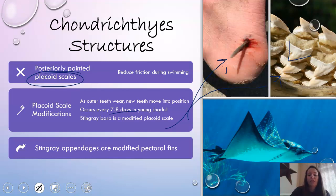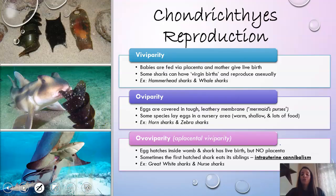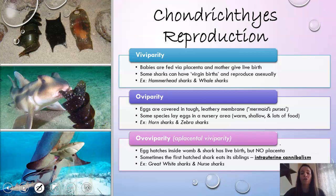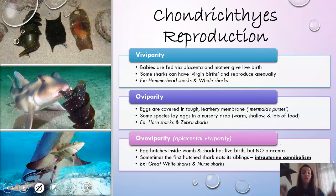Reproduction is also very unique in chondrichthyes. There are three different types. Viviparity is kind of like us — babies are fed via placenta and the mother gives live birth, although some sharks can actually have virgin births and produce offspring asexually. Examples of this are hammerhead sharks and whale sharks.